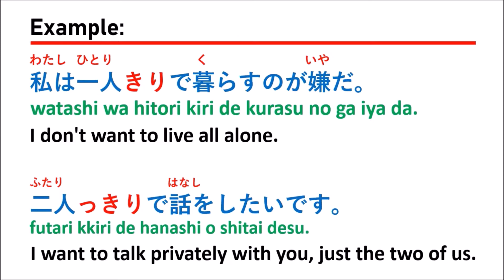Futarikiri means only two people, nobody else — just two people facing each other and talking. So when you use hitorikiri in the first sentence, it means only you alone: only you, no marriage, no children, no friends. And futarikiri de hanashitai means only two persons talking together, nobody else joining — I want to talk to you privately, because it's a secret.